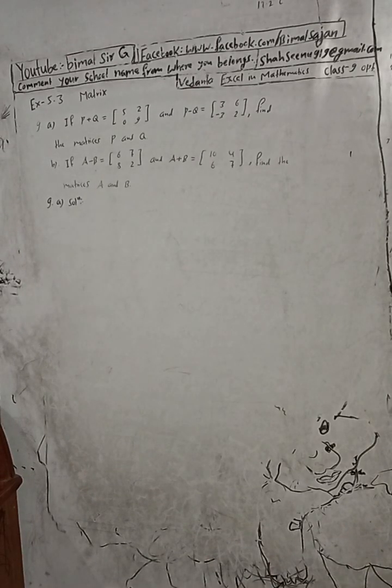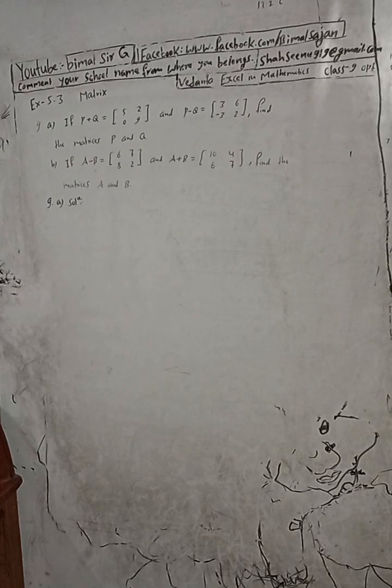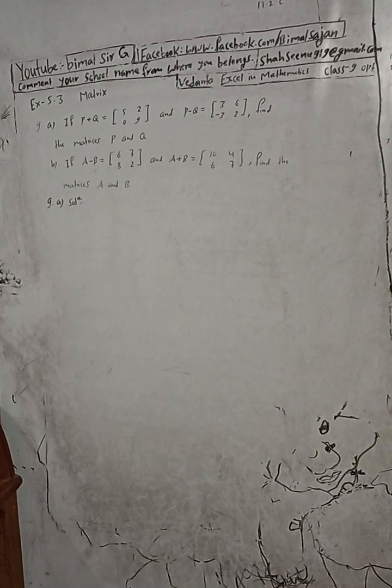Hi Class 9 and 10 students, welcome back to the YouTube channel. This is question number 9, exercise 5.3, matrix chapter, Vedant Excel in Mathematics Class 9. This is OPT mathematics. Don't forget to check the playlist — in the playlist you will get a lot of solutions.